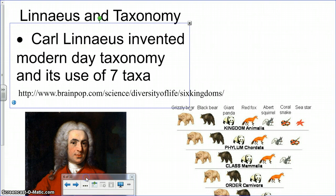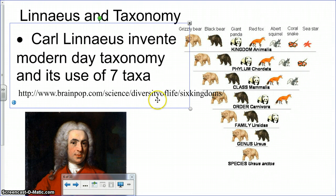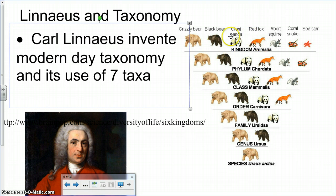There was a guy named Carolus Linnaeus, and he's responsible for beginning the whole process of classifying animals based on their names and characteristics. Carolus Linnaeus — or Carl Linnaeus — invented modern-day taxonomy, which is the way that we classify organisms, with its use of seven taxa. The seven taxa are listed in an upside-down triangle, representing that the topmost taxon is the most encompassing — the biggest — and then it gets narrowed down.